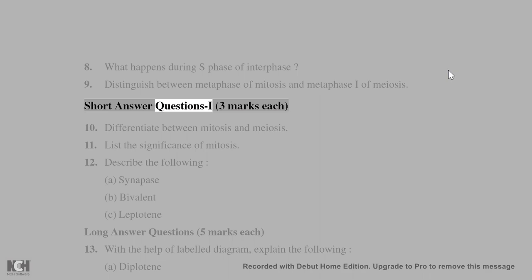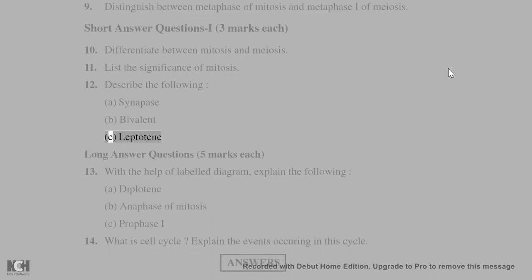Short answer questions I (3 marks each): (10) Differentiate between mitosis and meiosis. (11) List the significance of mitosis. (12) Describe the following: (A) Synapsis, (B) Bivalent, (C) Leptotene.